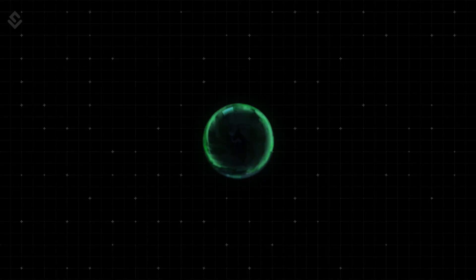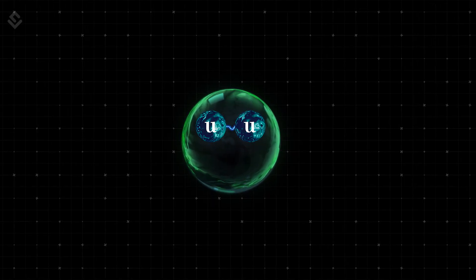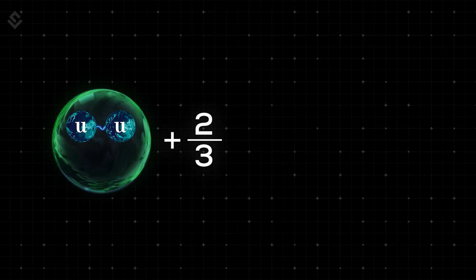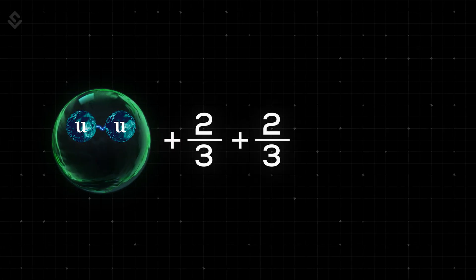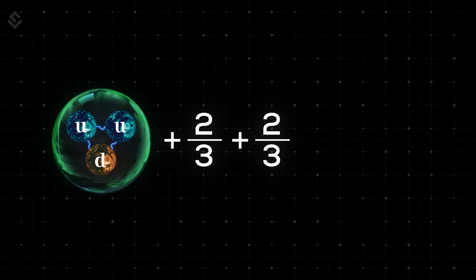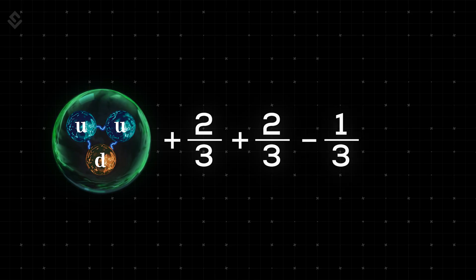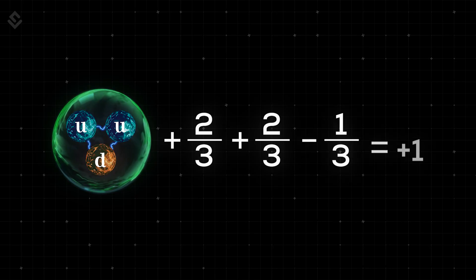Still confused? Let's count. So a proton has got two up quarks, 2/3 plus 2/3, and one down quark, minus 1/3. Sum it up, and the net charge that you will get is plus 1.